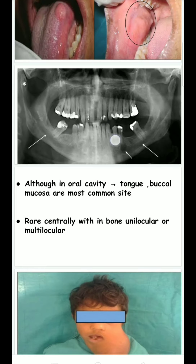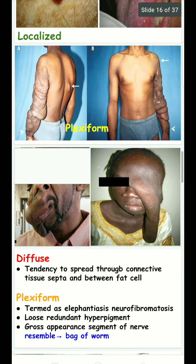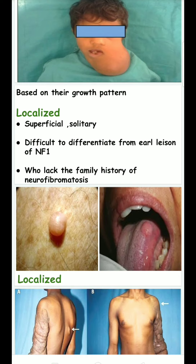It is unilocular or multilocular. Based on the growth pattern it is classified as localized, plexiform, or diffuse. In the localized type, it is superficial and solitary. It is difficult to differentiate from early lesion of neurofibromatosis type one in those who lack a familial history of neurofibromatosis.